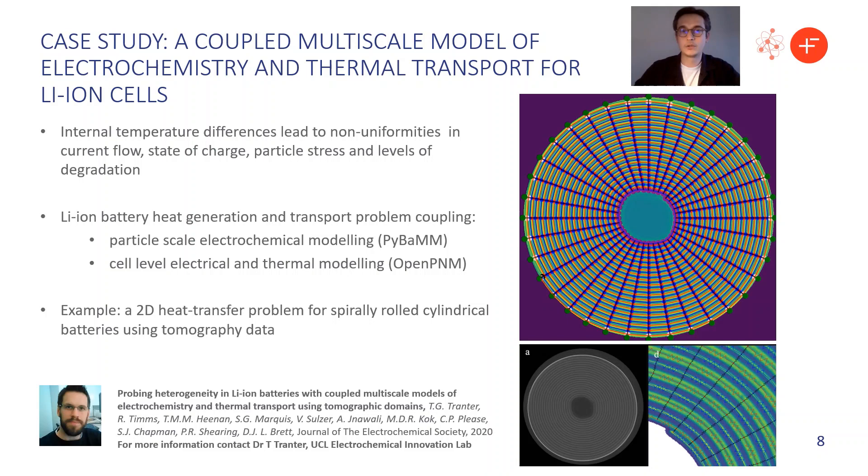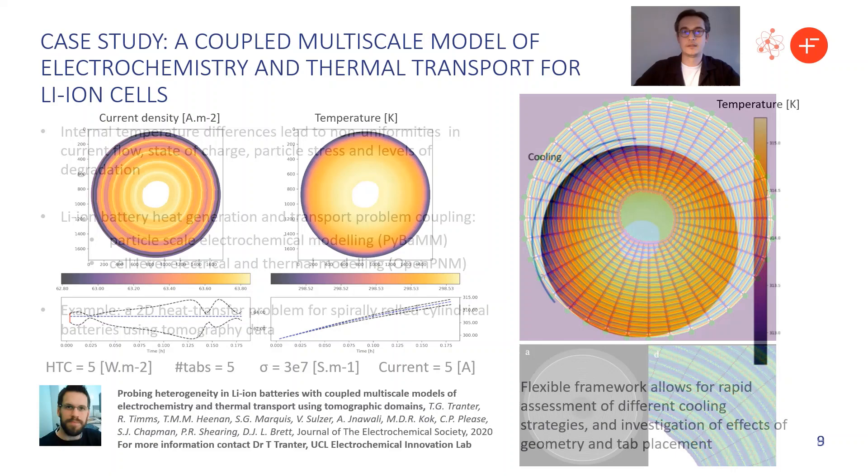And then a tomography image is taken and is used to construct an equivalent circuit model representation of the entire jelly roll. So here we combine a physics based local model for the electrochemistry and an equivalent circuit model at the length scale up one at the jelly roll scale. And you can use this to then solve a heat transfer problem within the jelly roll to understand how heat is generated and transported around.